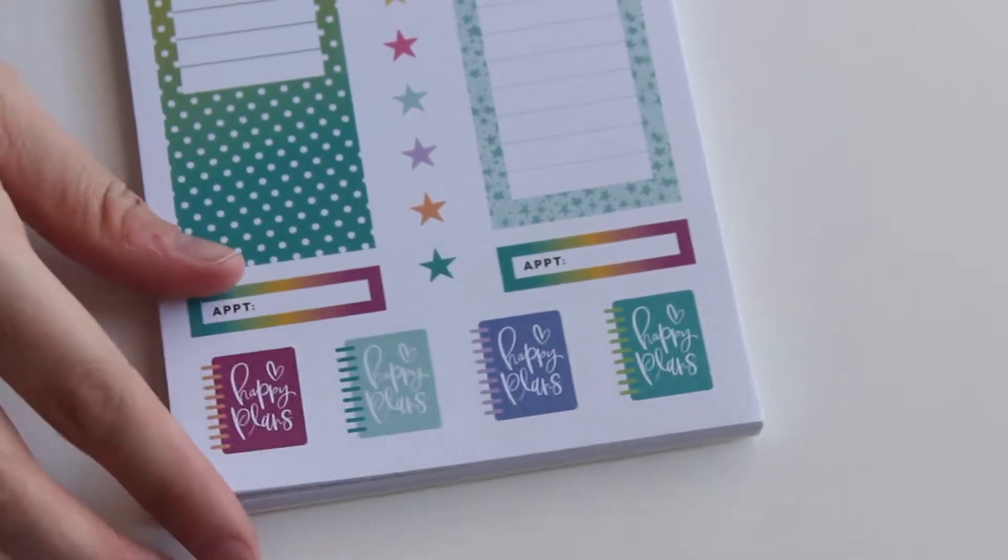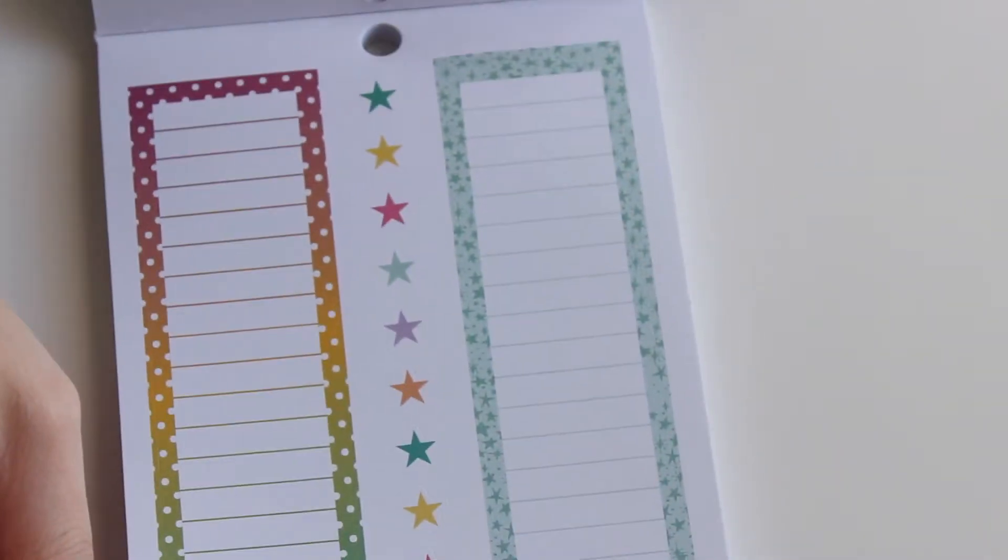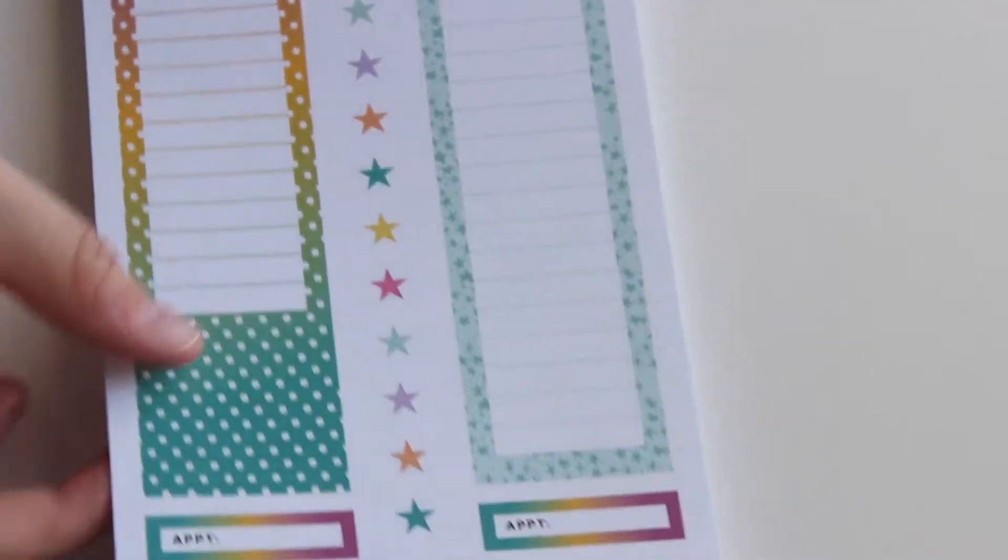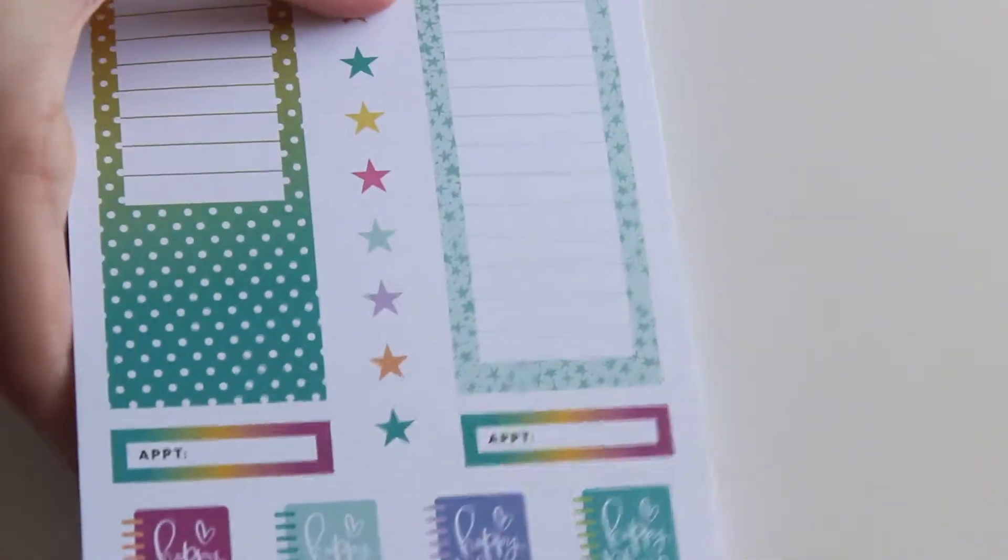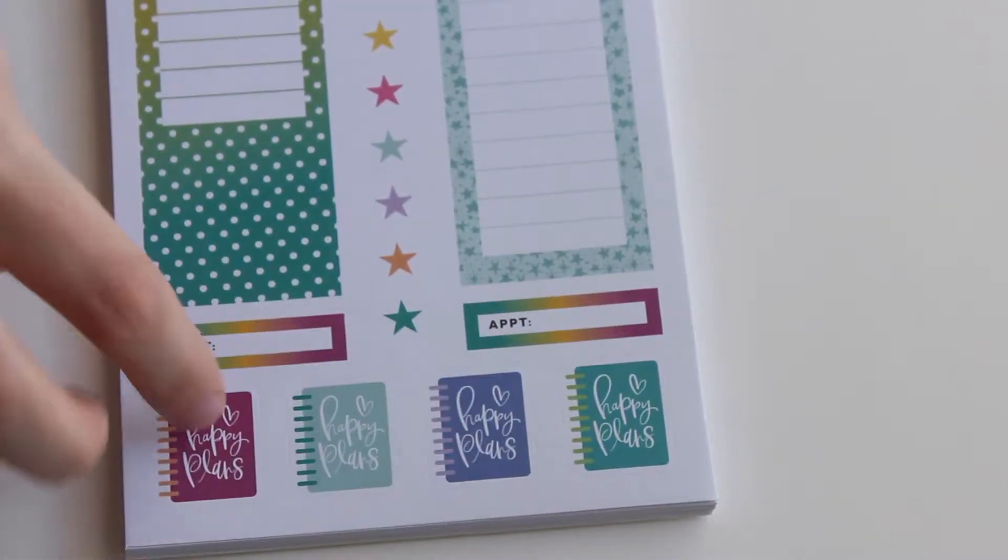This is a long sticker that would be good on the side of a daily or a monthly. And there are individual stars on this page too. And happy plans at the bottom.